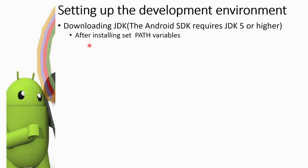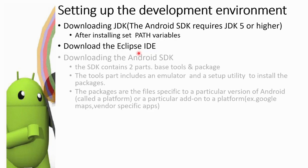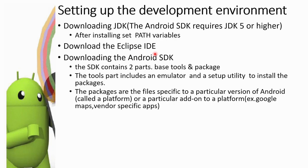The first step is to download JDK — the Java Development Kit. Android normally requires JDK 5 or higher versions. You can set the path variables and set the integrated development environment. You can download Eclipse IDE. After installing JDK, you can also download the Android SDK — the software development kit.